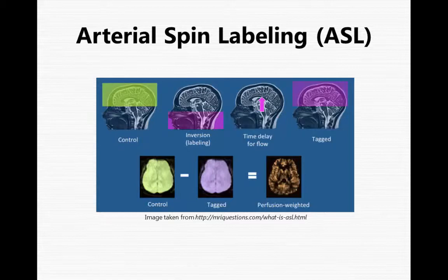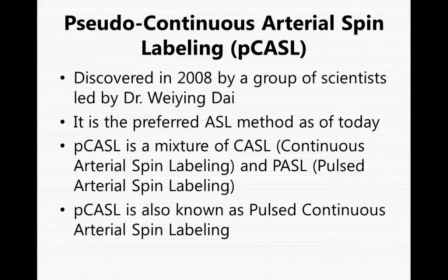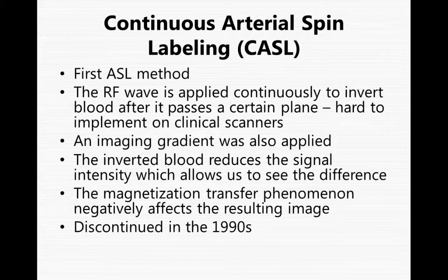Here is an image which shows the arterial spin labeling process. Pseudo-continuous Arterial Spin Labeling was discovered in 2008 by a group of scientists led by Dr. Wei Ying Dai. It is the preferred ASL method as of today. It is a mixture of CASL, which is Continuous Arterial Spin Labeling, and PASL, which is Pulsed Arterial Spin Labeling. PCASL is also known as Pulsed Continuous Arterial Spin Labeling.